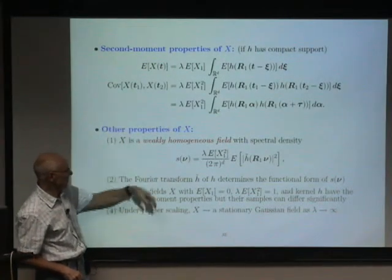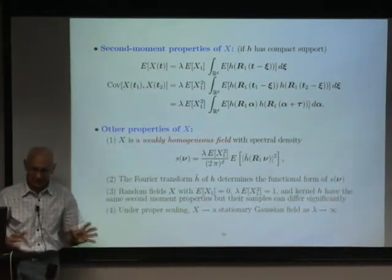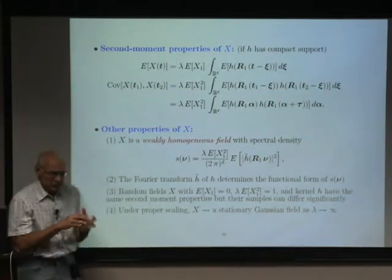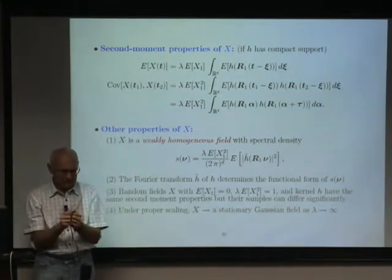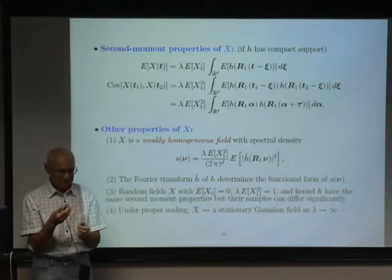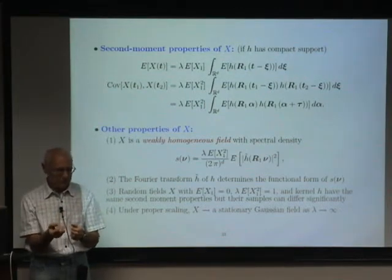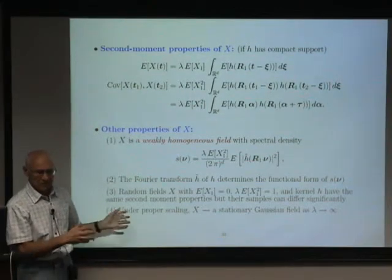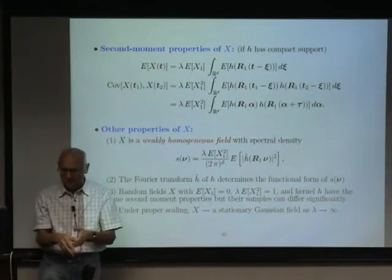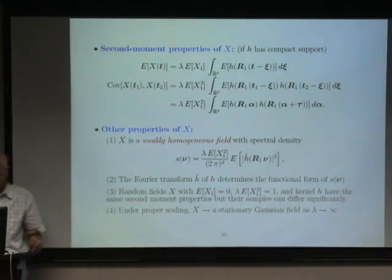Mean, correlation function, spectral density, all these things can be calculated easily. And of course, if you increase the rate lambda of the mean rate of the Poisson field, you increase it to infinity with proper scaling, you end up with a Gaussian process. There are all these nice properties of it.